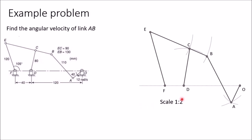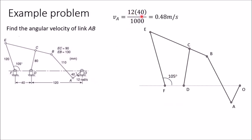Now we start the relative velocity method. We need the velocity of at least one point. OA is rotating anti-clockwise at 12 radians per second, so the absolute velocity of A equals V = R·ω = 40 mm × 12 rad/s ÷ 1000, giving 0.48 m/s. This velocity of A is perpendicular to OA and directed downward because the rotation is anti-clockwise.